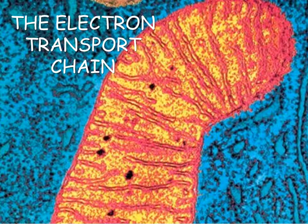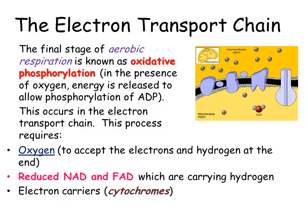This video will look to explain how the electron transport chain works. The electron transport chain is found on the inner membrane of the mitochondria. It's involved in the final stage of aerobic respiration which is called oxidative phosphorylation. Basically what we're doing is we're adding a phosphate group to ADP to make ATP, and as this happens in the presence of oxygen it's called oxidative phosphorylation.